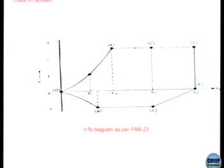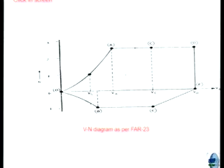Here is the V-N diagram as per Federal Aviation Regulations Part 23, applicable for small general aviation aircraft. We notice lines OA and OB. Since Nz is proportional to V², these lines are parabolas. OA connects the origin to VA at some speed at point A, with a horizontal cut on top, another on the bottom, a tapered cut at the bottom, and a vertical cut at the right. Any point inside the V-N diagram is an approved or acceptable operating point.